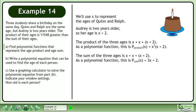The sum of the three ages is x plus x plus x plus 2. As a polynomial function, this is P_sum(x) = 3x + 2.